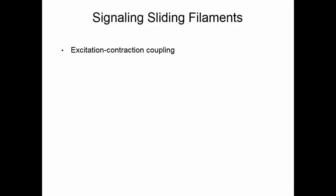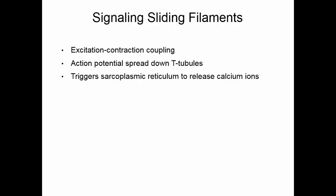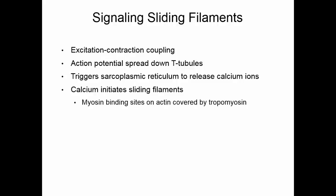Now that we have the action potential on the sarcolemma, we're ready to signal the sliding filaments. This is called the excitation-contraction coupling reaction. The action potential on the sarcolemma spreads down the T-tubules — extensions of the sarcolemma that go deep into the muscle cell. This triggers the sarcoplasmic reticulum to release calcium. Calcium is necessary to initiate the sliding of the filaments. The myosin binding sites on actin are covered by tropomyosin, which means that myosin and actin cannot connect.